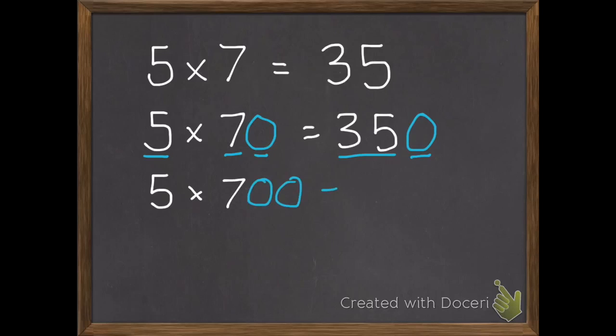The same pattern continues. If I have five times seven hundred, I have thirty-five hundred with two zeros. So once again, five times seven is thirty-five, one two zeros, one two zeros.